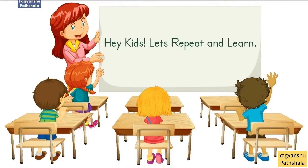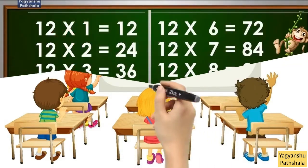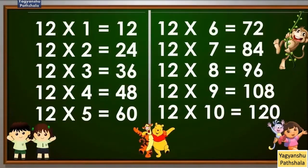Hey Kids, let's repeat and learn. 12 times 1 equals 12. 12 times 2 equals 24. 12 times 3 equals 36. 12 times 4 equals 48. 12 times 5 equals 60. 12 times 6 equals 72. 12 times 7 equals 84. 12 times 8 equals 96. 12 times 9 equals 108. 12 times 10 equals 120.